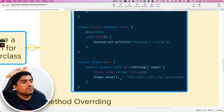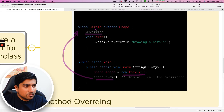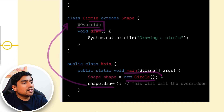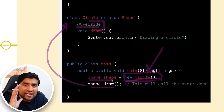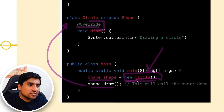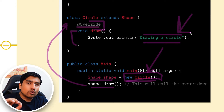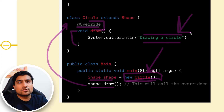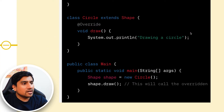We have overridden the 'draw' method in Circle. When we create an instance of Circle, the Circle's draw method will be called. The key rule to remember is: whoever's object is created — that part with 'new' — that is the object. You can have a parent reference of Shape, but whichever object is created, that class's method will be called. That is method overriding in Java.